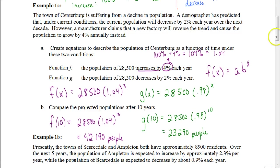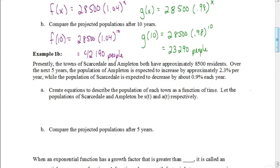I want you to try this next one on your own. Read the story problem: presently the towns of Scarcedale and Ampleton both have approximately 8,500 residents. Over the next five years, the population of Ampleton is expected to increase by approximately 2.3% per year, while the population of Scarcedale is expected to decrease by about 0.9% each year. Create two separate equations, calling them function S and function A, and find their populations after five years. Pause the video and hit play when you're ready to check your answer.